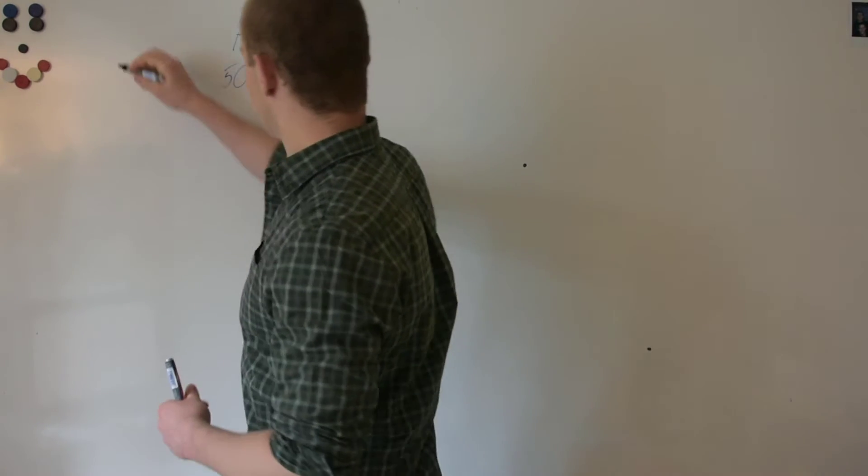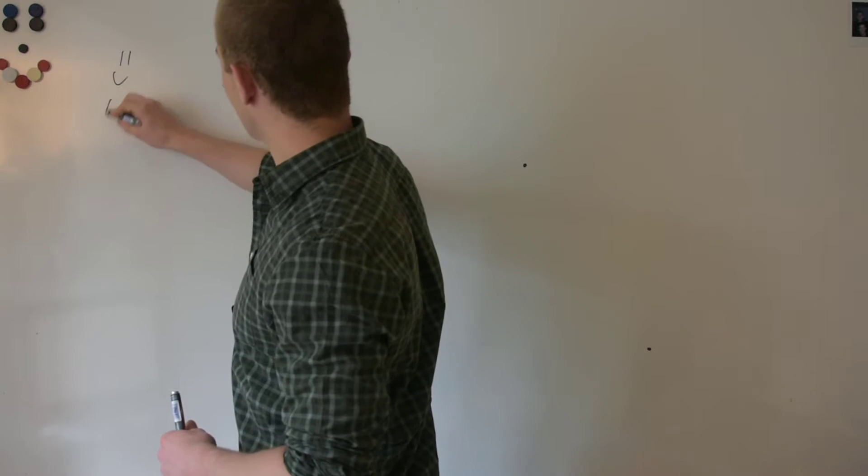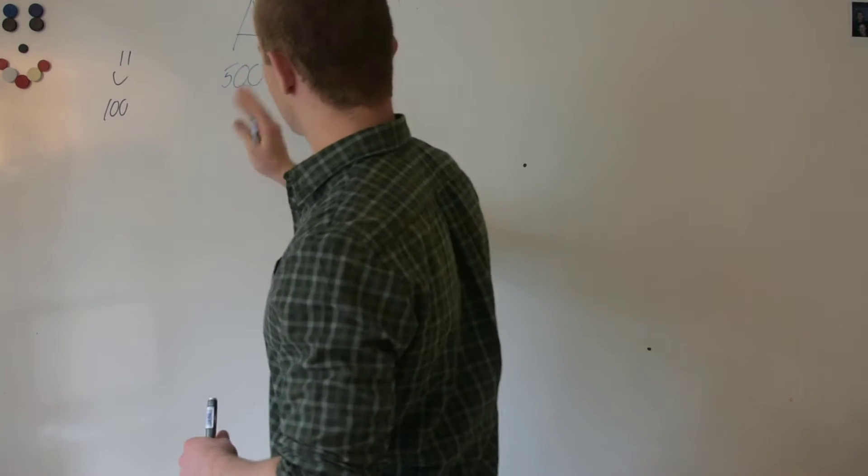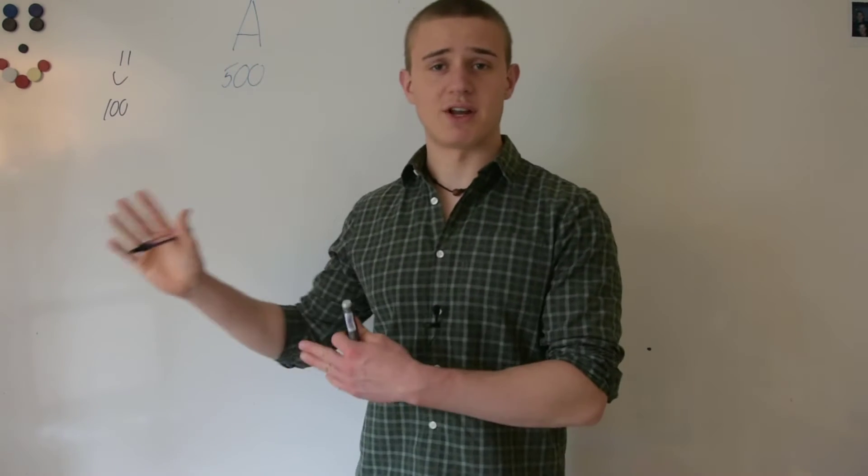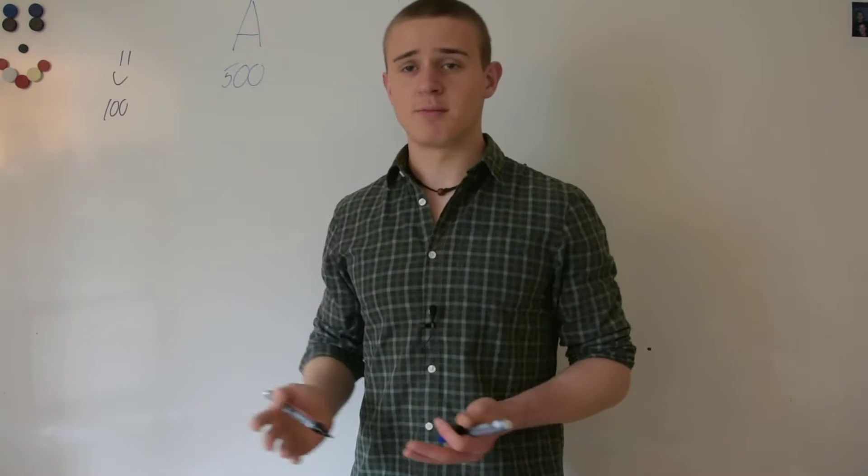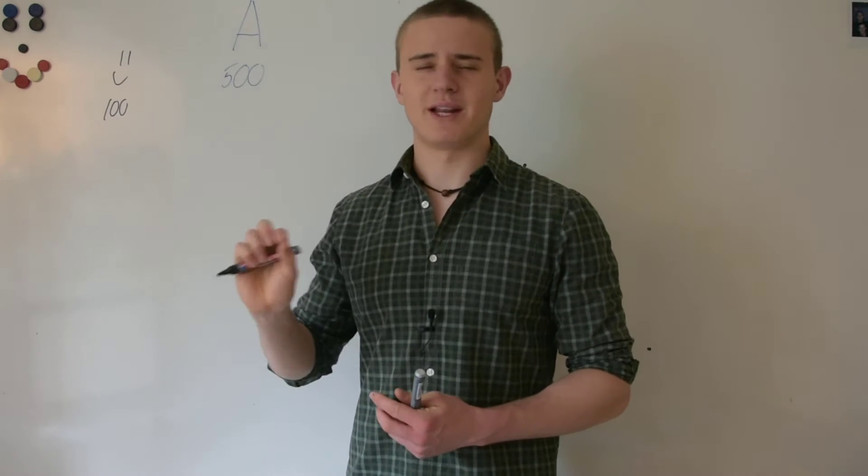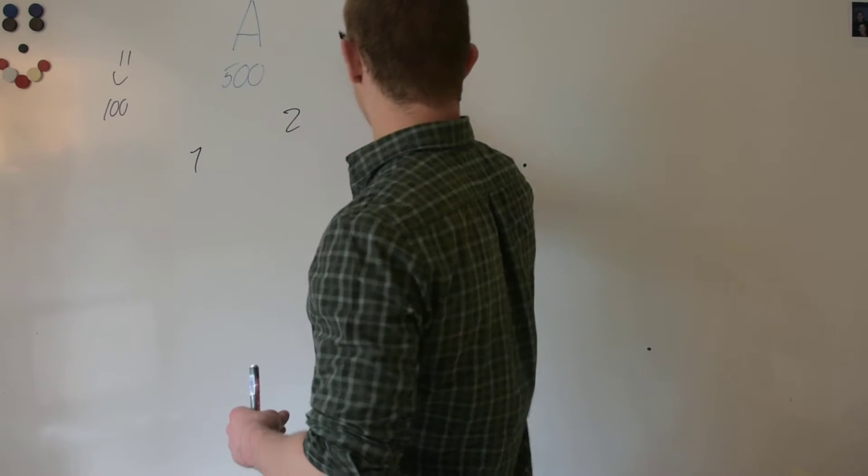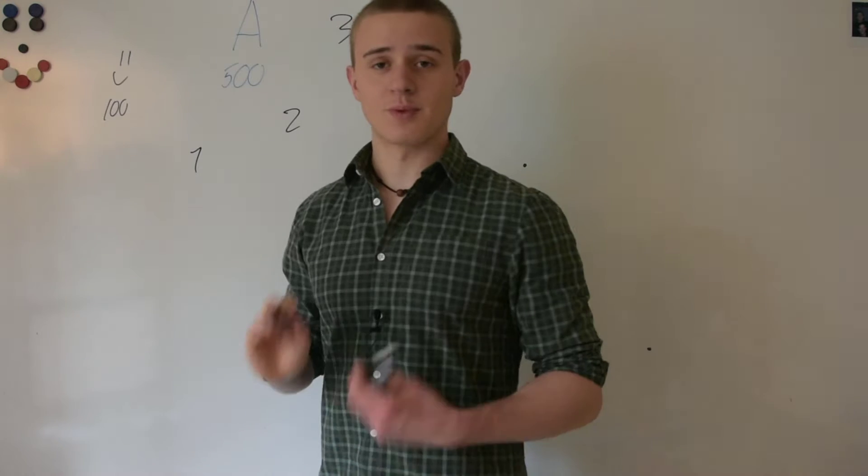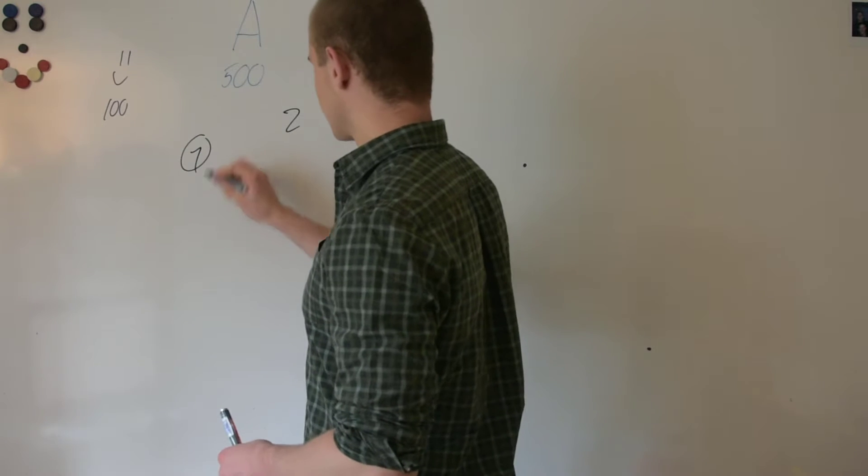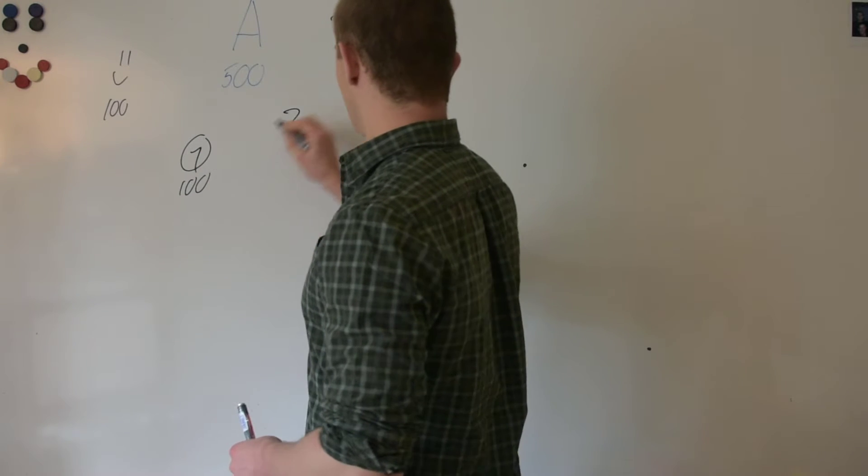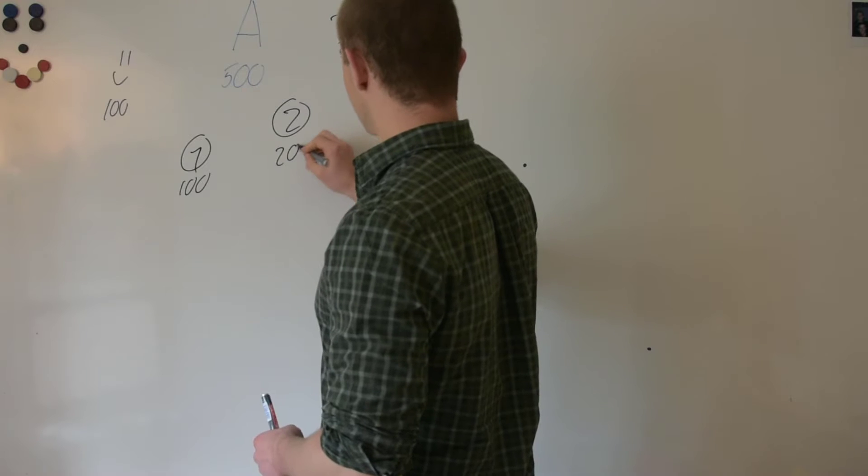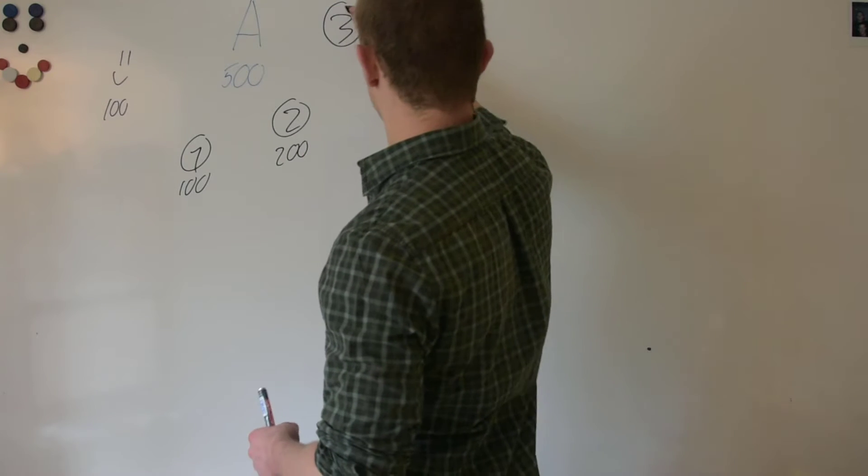And then there's you, and you have 100. You really want to buy that asset, but obviously you don't have enough. So you gather some people and you convince them that the asset's a really good buy. And let's say you manage to get one, two, three people on board. Person one has 100, person two has 200, and person three has 100.